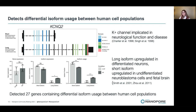This made biological sense to us, as the shorter isoform is missing the channel domains shown in green and pink. As cells differentiate and begin to show neuronal processes, the longer isoform with more domains included is upregulated. Further investigation of the literature confirmed this: previous studies have shown the shorter isoform is generally upregulated in undifferentiated neuroblastoma cells and fetal brain, while the longer isoform is upregulated in differentiated neuroblastoma cells and adult brain.